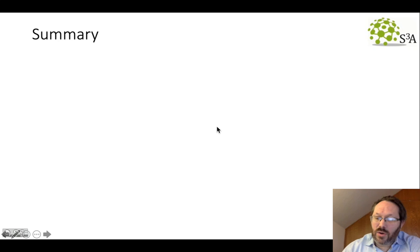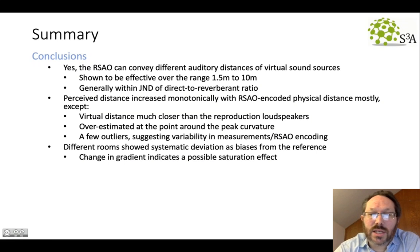So in summary, yes, the RSAO can convey different distances of virtual sounds, and it's effective over the range of about 1.5 to 10 meters. And the results were generally within the JND of the direct to reverberant ratio. We saw that the perceived distance increased monotonically for the vast majority of points, with a few notable exceptions. For this point at 1 meter, the virtual distance collapsed onto the reproduction loudspeakers, and we overestimated the perceived distance at around the point of this peak curvature in both rooms. Also, there were a few outliers suggesting some variability in the measurements and the encoding. But the two rooms showed some systematic deviation from that reference line, which showed that there was this steeper gradient, followed by a gentler one, indicating a possible saturation effect. Those would be some interesting things to investigate in the future.